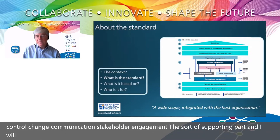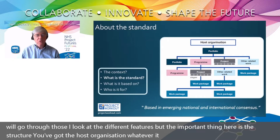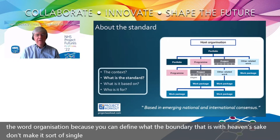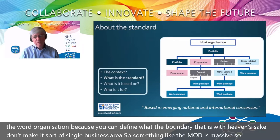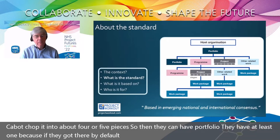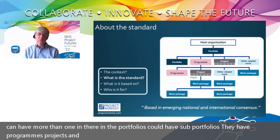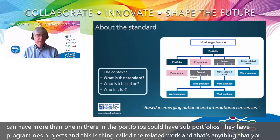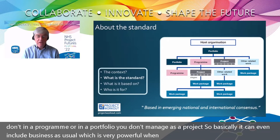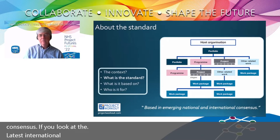The standard's structure has a host organisation at the centre — deliberately called 'organisation' so you can define the boundary. Something like the MOD is massive, so they split it into about four or five pieces. By default, the organisation is the portfolio, and can have more than one. Portfolios can have sub-portfolios, programmes, projects, and 'other related work' — anything not managed as a project within a programme or portfolio, which can even include business as usual. This structure is based on an emerging national and international consensus visible in the latest international standards.